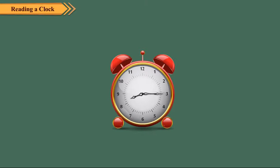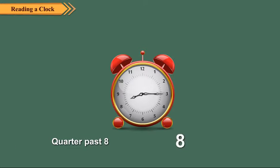Again, look at this clock. Here, the minute hand is at 3. The hour hand is between 8 and 9 and closer to 8. The time is 15 minutes after 8. We write it as quarter past 8 or 8.15. So, when the minute hand is at 3, the time is quarter past the hour.